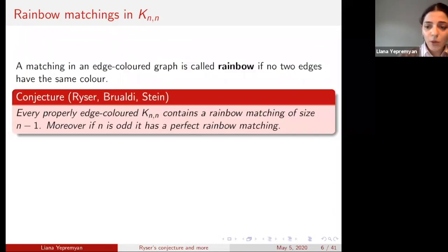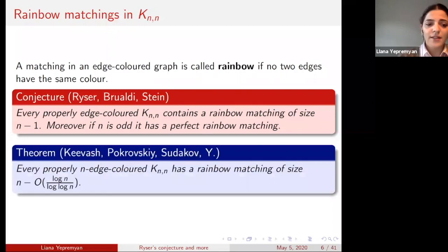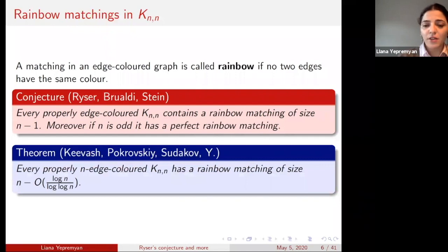So in this language, what we proved is that every properly n-edge-colored complete bipartite graph K_{n,n} has a rainbow matching of size n minus O(log n / log log n).